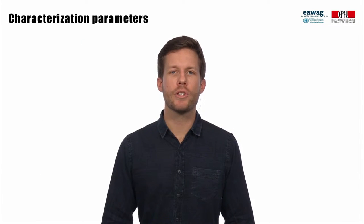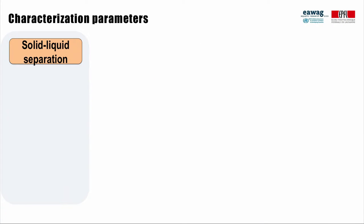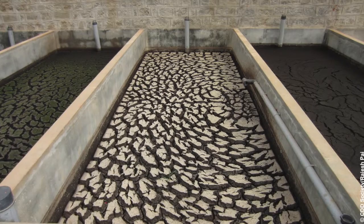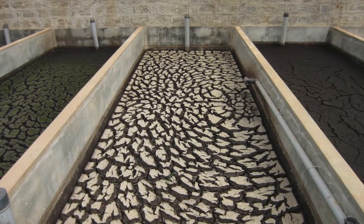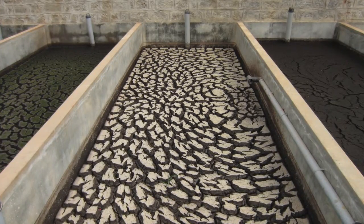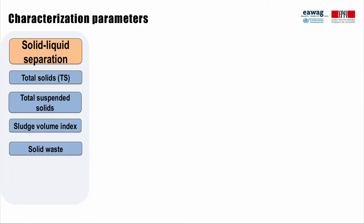Characterization parameters relevant for different treatment technologies can be grouped according to their treatment objectives. For technologies designed for solid-liquid separation, solid parameters such as total solids (TS) and total suspended solids are important. Total solids are for example important for the dimensioning of drying beds. Other important parameters include the sludge volume index, a metric to estimate solid and liquid separation of fecal sludge, the amount of solid waste, oil and grease, and grit and sand.